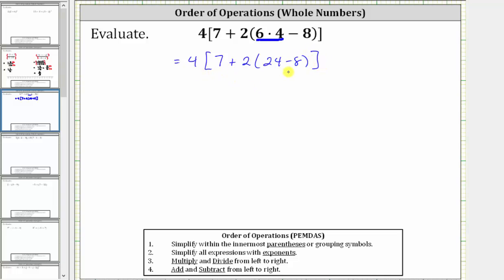Still simplifying within the innermost grouping symbols, we now determine the difference. 24 minus eight is equal to 16. The expression simplifies to four times the quantity seven plus two times 16.